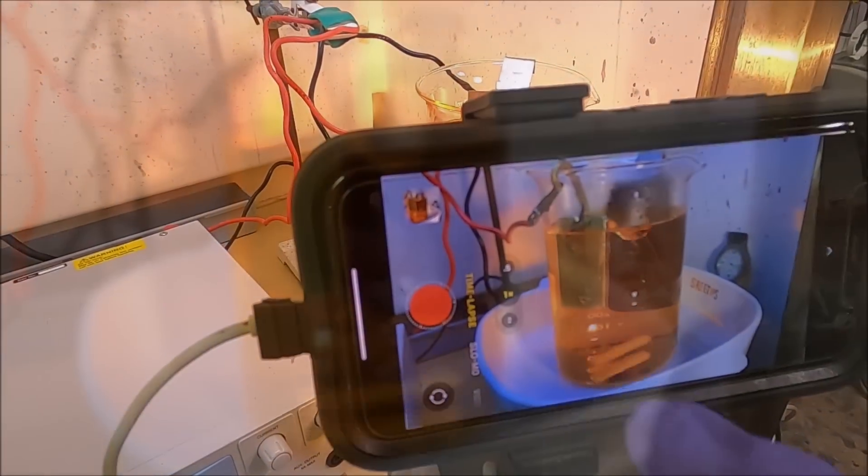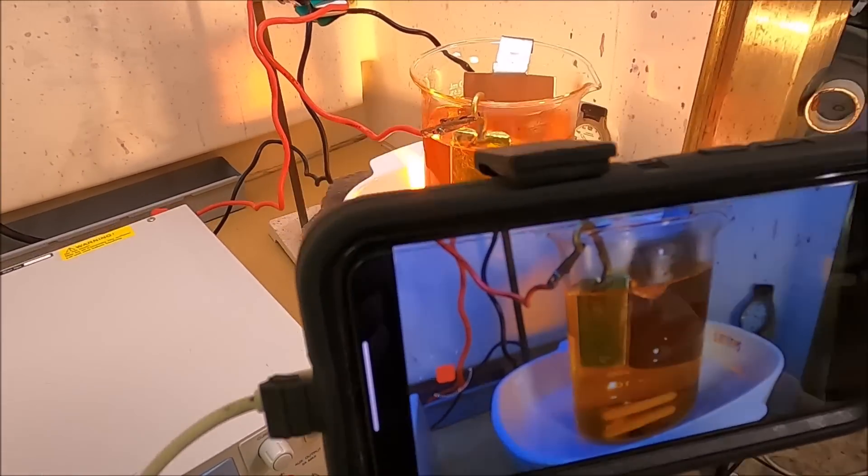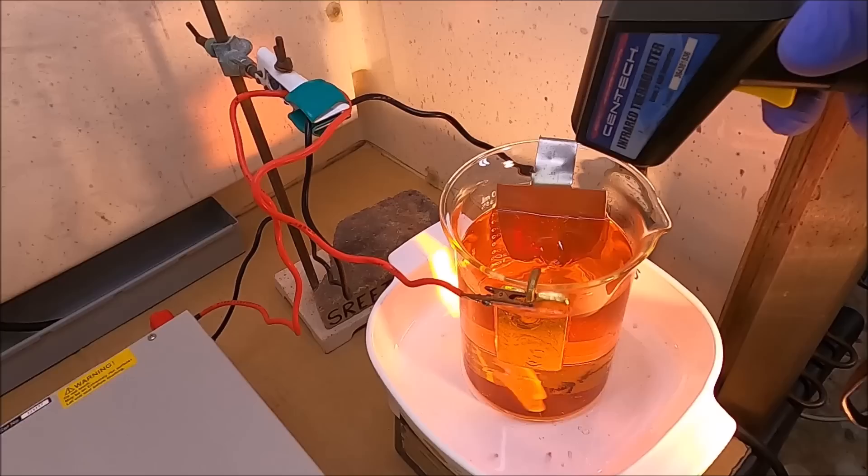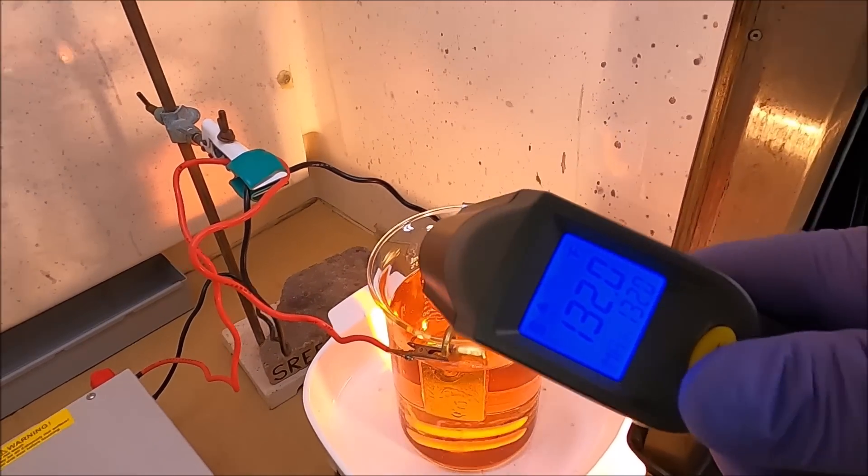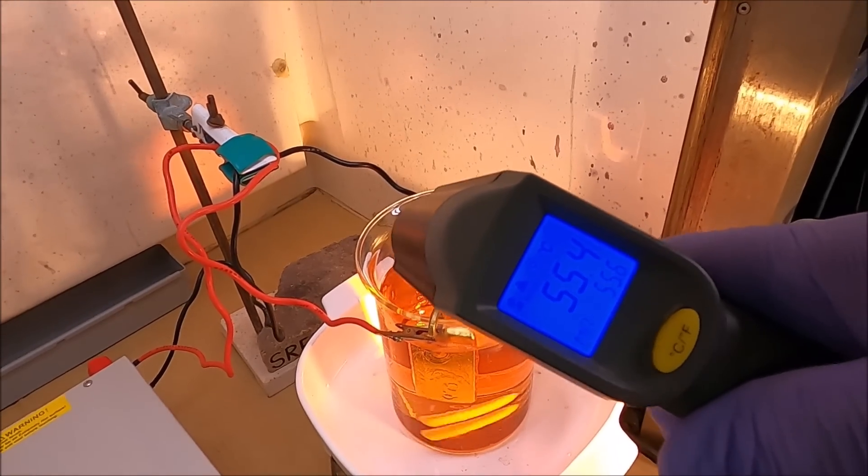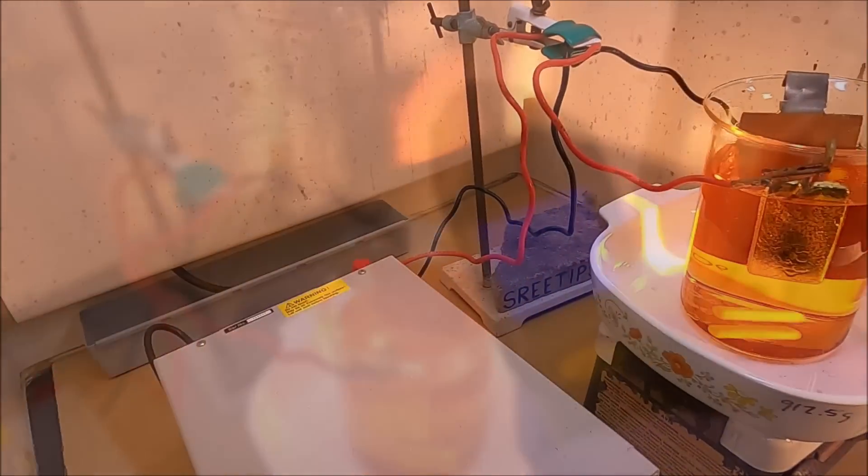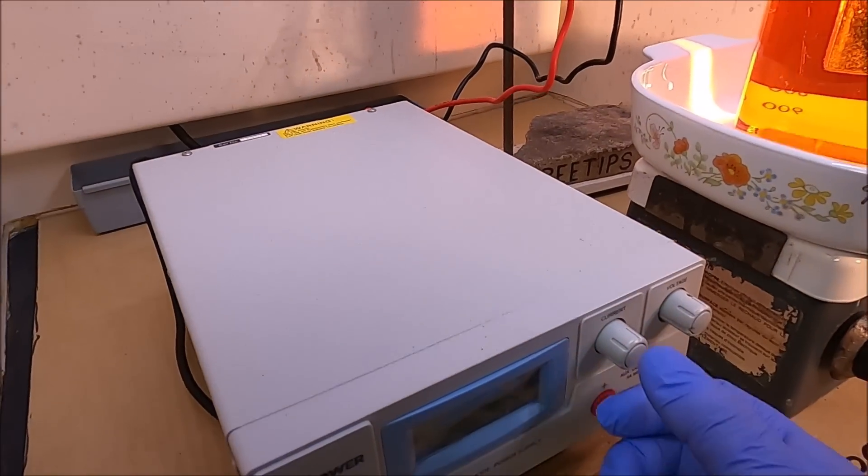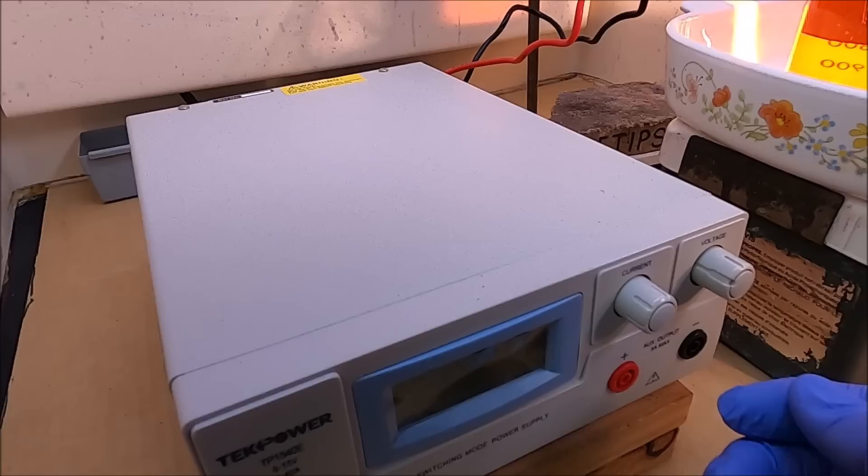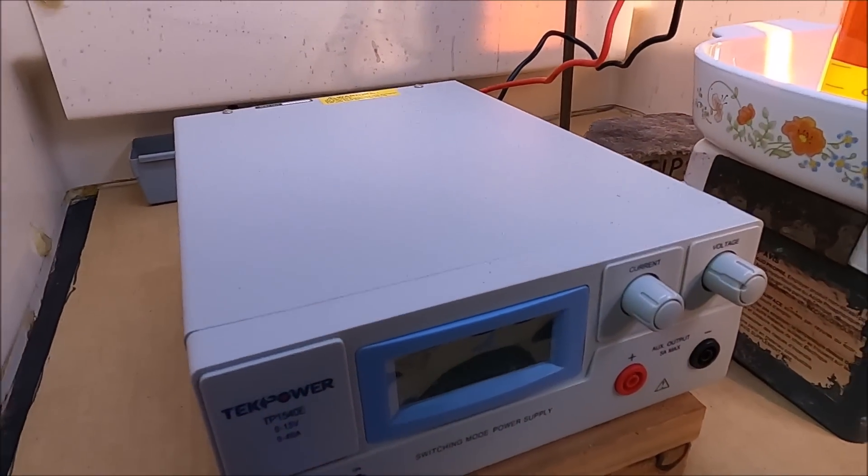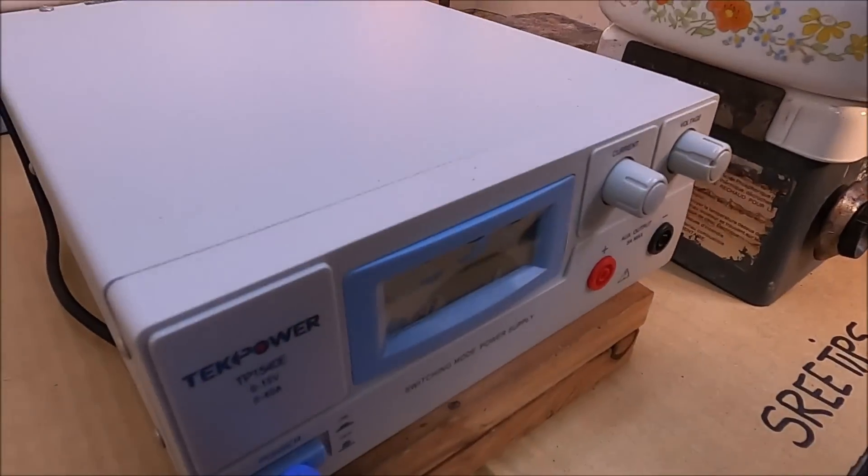I'm going to start the time lapse. We've got 132 Fahrenheit and 55.4 Celsius. What I'll do now is turn the current flow all the way up and the voltage all the way down. I'm going to energize the power supply now. We shouldn't get any kind of reaction when we do this.